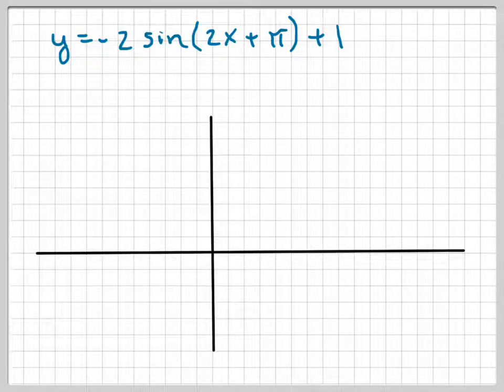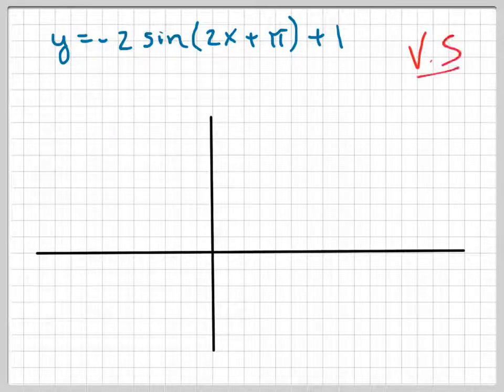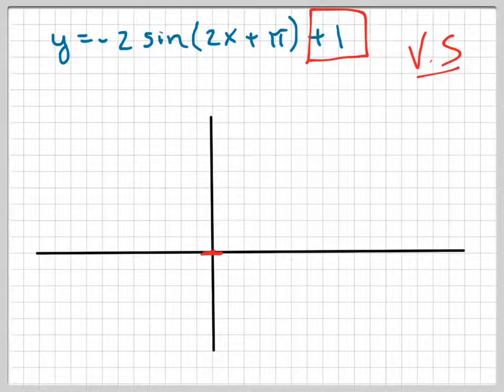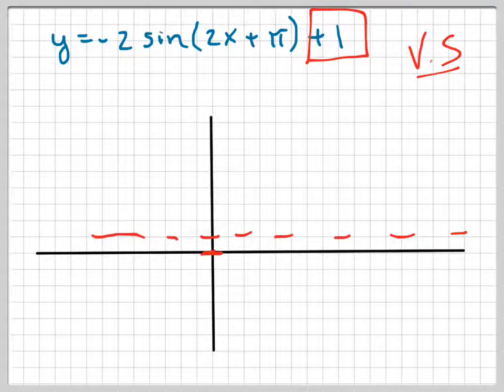Let's graph y equals negative 2 sine of 2x plus pi plus 1. The pattern I use is I first deal with the vertical stuff. My vertical shift is 1, so instead of starting at the x-axis, I'm going to start above it. I like to draw the line in — there's my vertical shift.